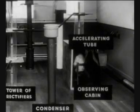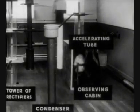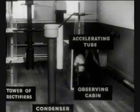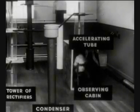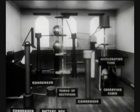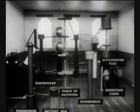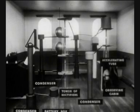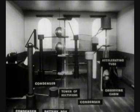The first nuclear transmutations with laboratory-accelerated particles were produced by Sir John Cockcroft and Professor E.T.S. Walton. This is a model of their apparatus. Charged hydrogen nuclei were accelerated with a high voltage, produced by the use of transformers, condensers, and rectifying valves.